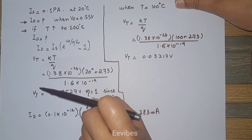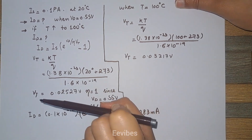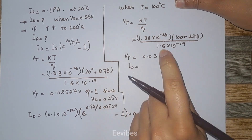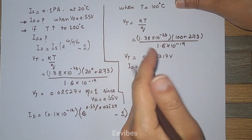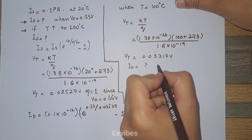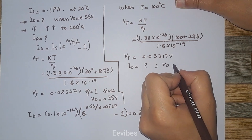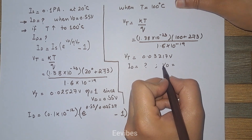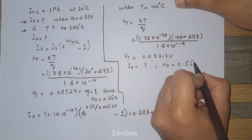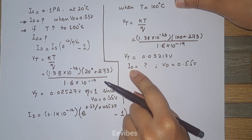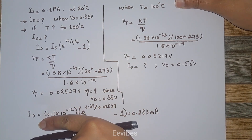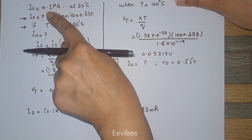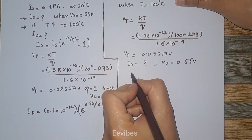One thing to notice in this example: for determining the value of ID when both temperatures are different, we will be using the same value of VD = 0.55 volts. However, we should not use the same value of IS, because IS doubles for every 10 degrees centigrade rise in temperature.